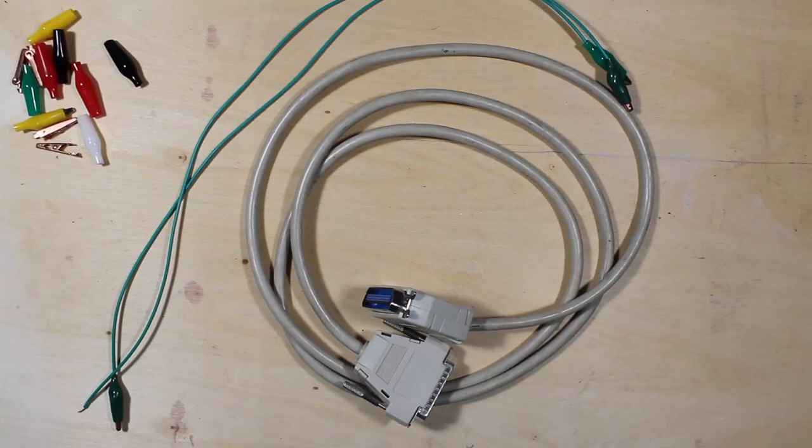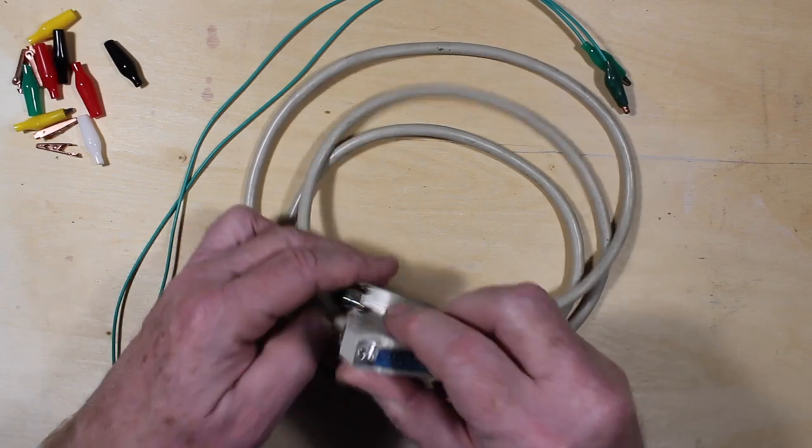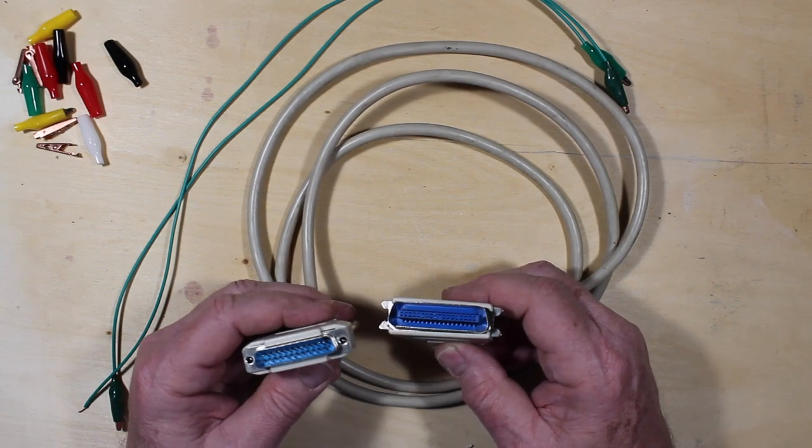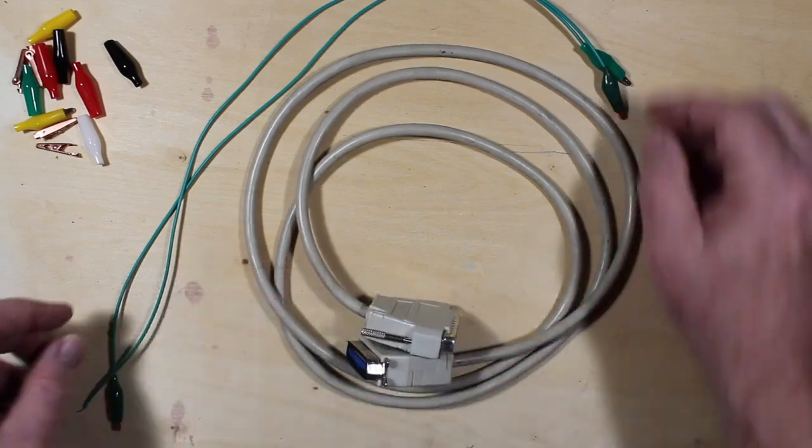At the end of my fake wire surprise video I mentioned that there's a lot of good wire to be had inside some of these old printer cables. This is a Centronics printer cable here that's going to be our donor today, and we're going to take this apart and make some decent jumpers.